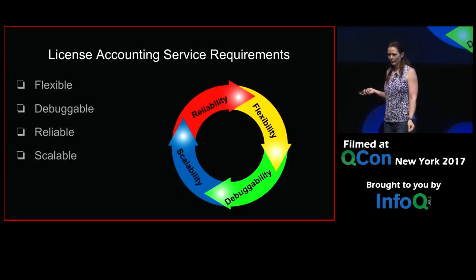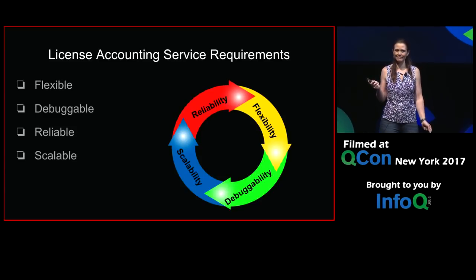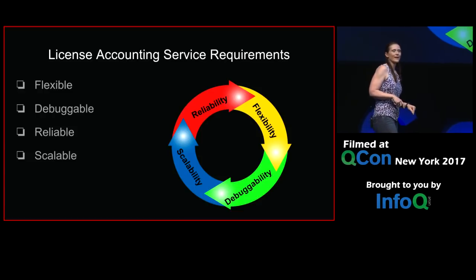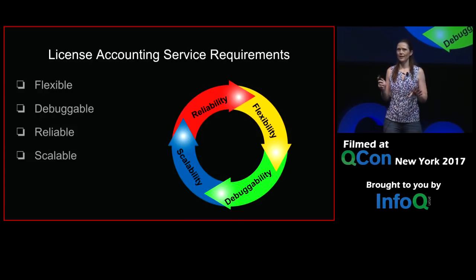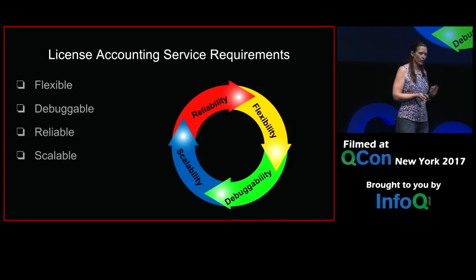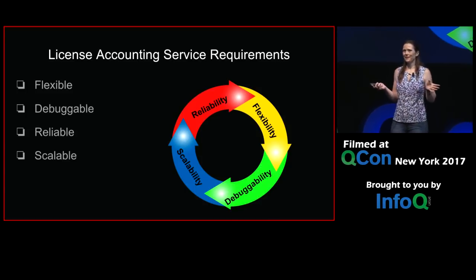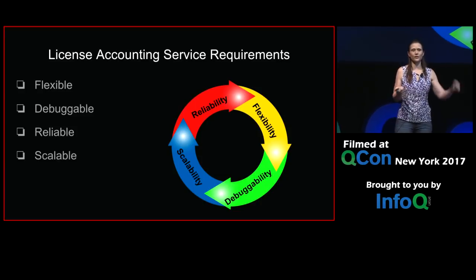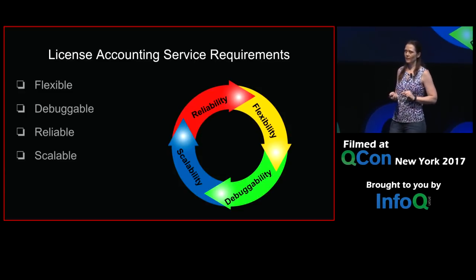Third, it needs to be reliable. We're a tier-one service — if we go down, Netflix goes down. Let's not do that. How can we make this reliable and fault tolerant so we're not going to bring down the service? Fourth, it goes without saying, we're Netflix — we need to be scalable. We needed to scale from that very first day to potentially tens of millions of users around the world.